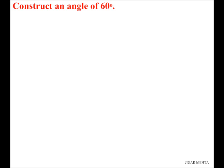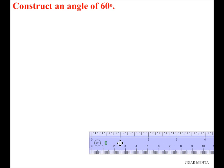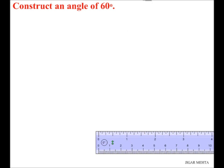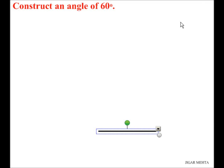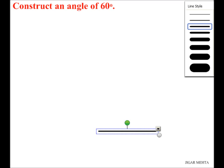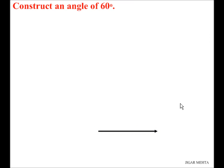In this session we are going to learn about how to construct an angle of 60 degrees using a compass. First thing we need to do is draw a ray as the base of the angle. The length of a ray is not fixed, so I'm going to take any convenient length. I have drawn a line segment and I'm going to change it into a ray.